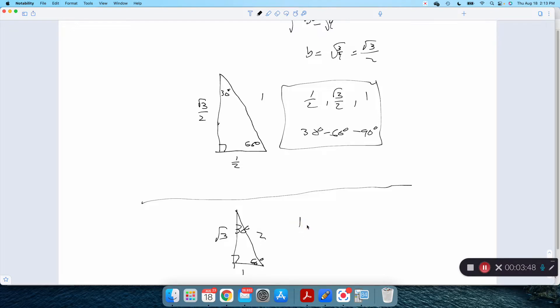So I just memorize this order: 1, root 3, 2. And that goes with the 30, the 60, and the 90.